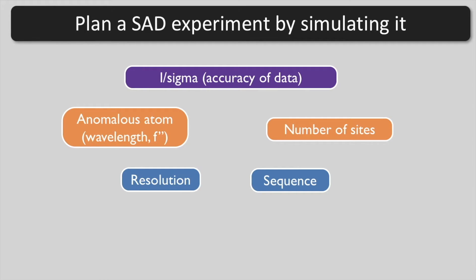Putting all these together, we can estimate the anomalous signal. Let's calculate the expected anomalous signal in our real data set.